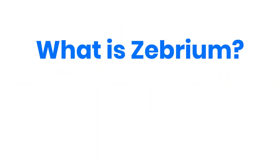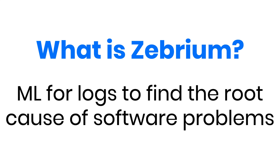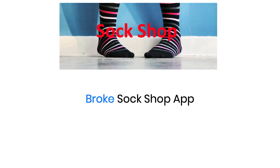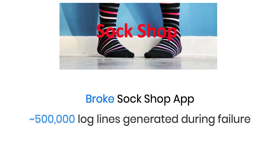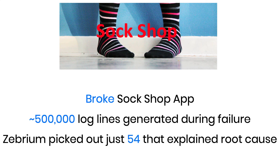Let me quickly summarize what Zebrium is about. Zebrium performs machine learning on logs with the goal of automatically finding the root cause of any kind of software or infrastructure problem. To recap what you saw earlier: when I broke the Sock Shop app, about half a million log lines were produced by the application and infrastructure, and our machine learning picked out the right 54 of them that almost perfectly explained what happened. Imagine how long it would have taken a human to piece together the details from half a million log lines spanning 34 different log types.